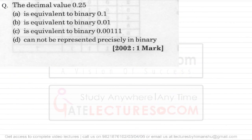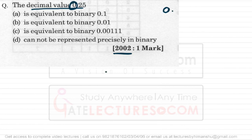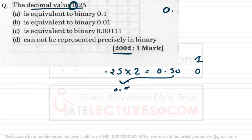Next question (GATE 2002): find the binary equivalent of decimal 0.25. The integer part is 0, so the binary integer part is 0. For the fractional part, multiply repeatedly by 2: 0.25 × 2 = 0.50 (integer part 0), then 0.5 × 2 = 1.0 (integer part 1). We stop here. Reading the integer parts gives 0.01 in binary, which is option B.